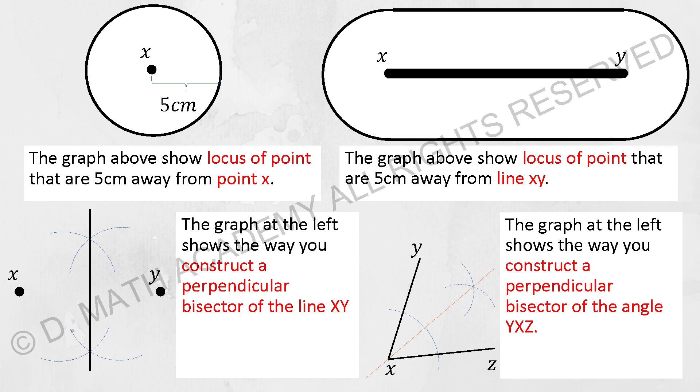Then from there you change up the length of the compass. From the point where they intercept, there's two points over there, you draw another two curves. Then you finally draw down the line.